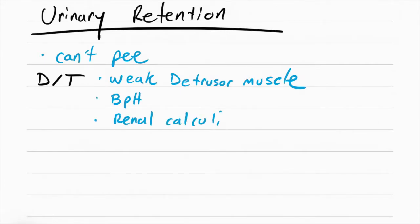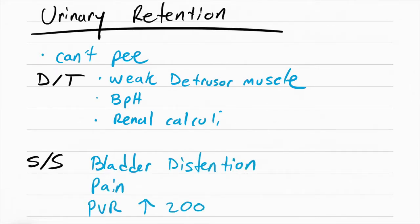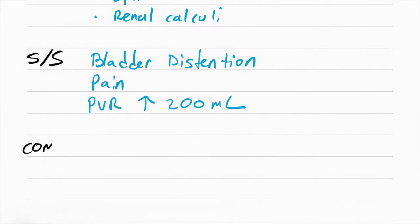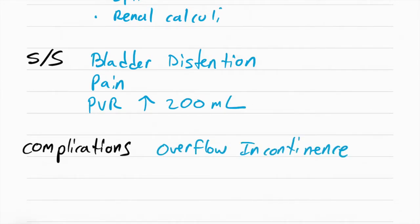All of this is going to cause the patient not to be able to pee and they're going to have the signs and symptoms of bladder distension, pain, and a post-void residual above 200 mL. This means after they urinate they're still going to have more than 200 mL in the bladder. Some of the complications that come with not fully emptying out the bladder and keeping urine in there can include overflow incontinence, which means the bladder gets so full that some of the urine comes out without the patient wanting it to.